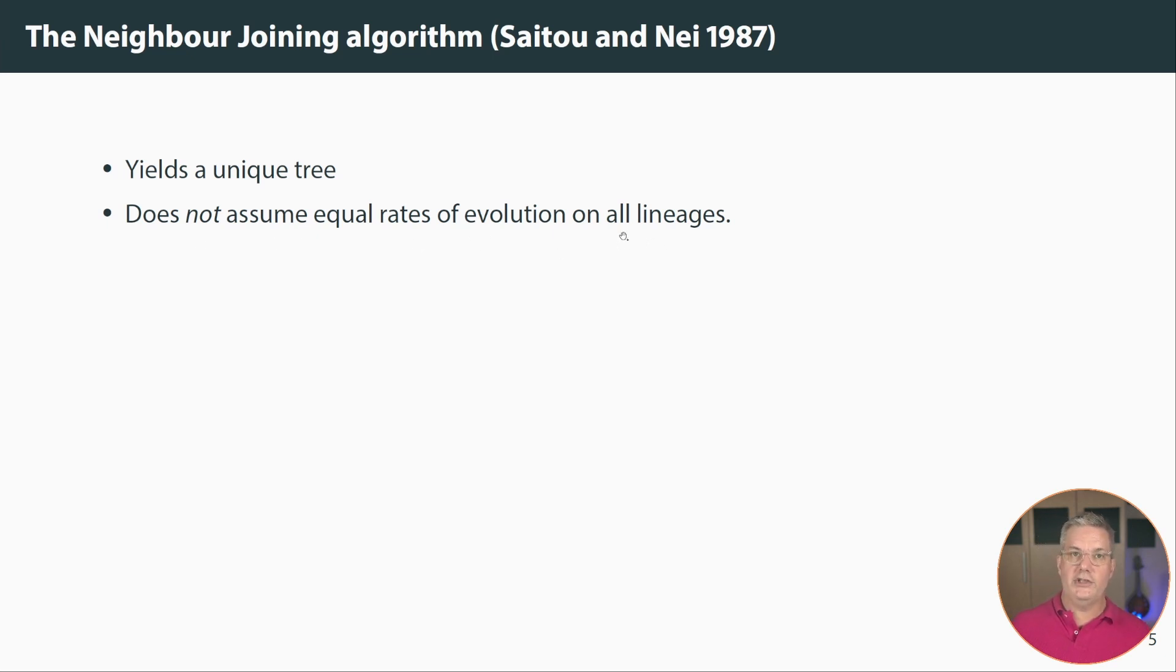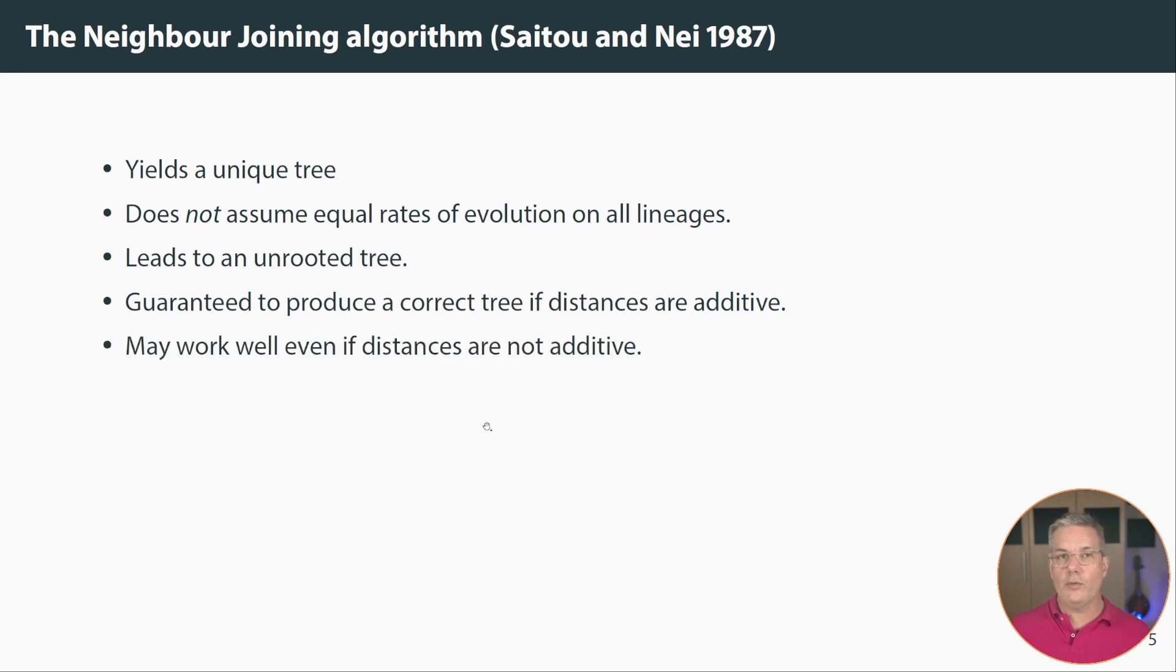The neighbor joining algorithm yields a unique tree from a set of distances and key it does not assume unlike UPGMA that it doesn't assume a molecular clock. It doesn't assume equal rates of evolution on all of the lineages that will appear on the tree. It also doesn't tell us the order of events in time because there's no root in a neighbor joining tree. It's guaranteed to be correct to produce the only correct possible tree if the distances that are input are additive but it often works well even if the distances are not additive.